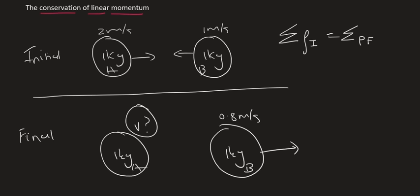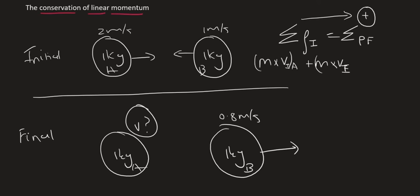Direction is very important, so we will choose a direction as positive. The sum of the momentum of the system before the crash is going to be: mass times the initial velocity for object A, plus mass times the initial velocity for object B, and that must be equal to mass times the final velocity of object A, plus mass times the final velocity of object B.